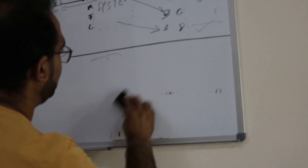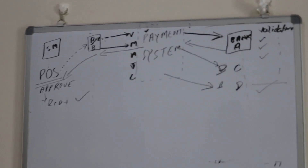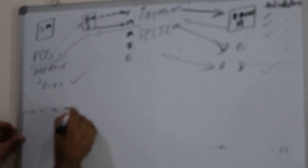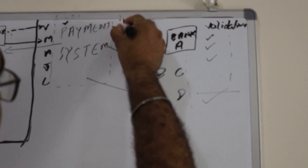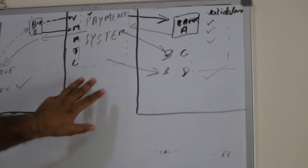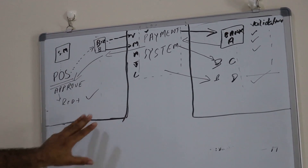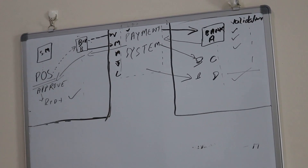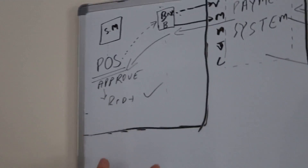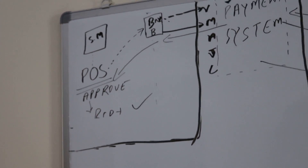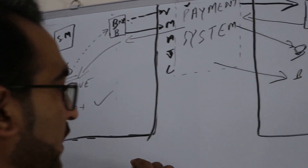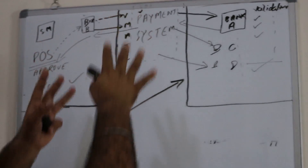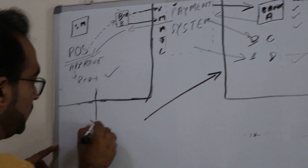Now in this diagram I will highlight two major blocks. We will cover more details in further videos. Block one and block two — this first block represents those who are accepting your transaction at the terminal level. They are actually acquiring your transaction: they receive it, hold it momentarily, and forward it to the payment system, which forwards it to Bank A. This block is called the acquirer.